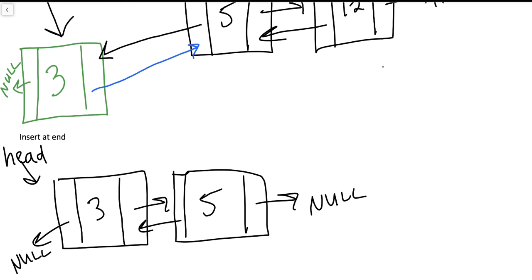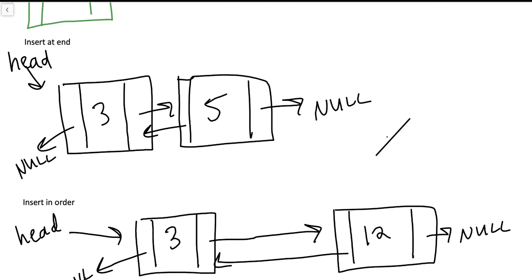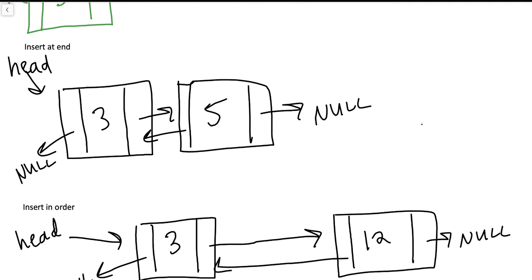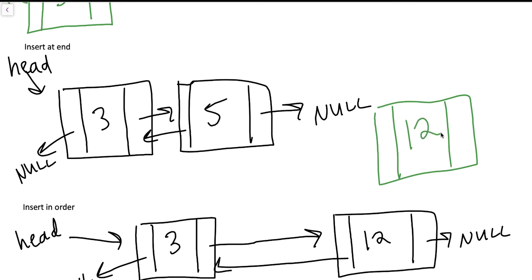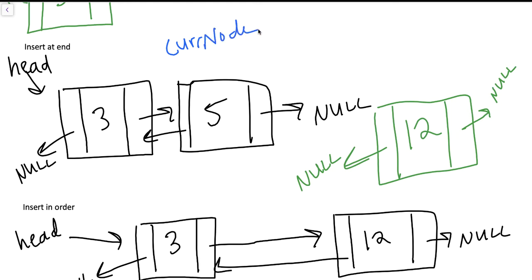Let's move on to inserting at the end of a list. Using the same initial two-node list, I'll draw a new node in green towards the end — let's insert the value 12. Its prev pointer is null initially and its next pointer is null initially. Since we don't have a tail pointer, we use a cur node pointer, traversing from head until we reach the last node, which we identify when cur node's next pointer is null — that's this five node right here.